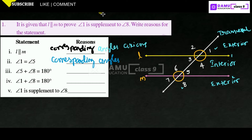Angle 1 and angle 5 are corresponding angles — they occupy the same position at their respective intersections on the same side of the transversal. So angle 1 equals angle 5.